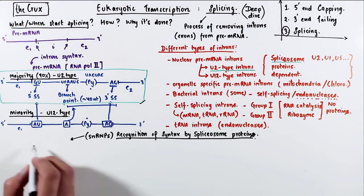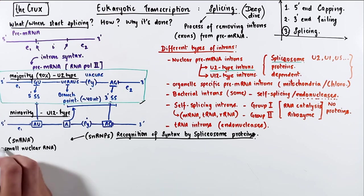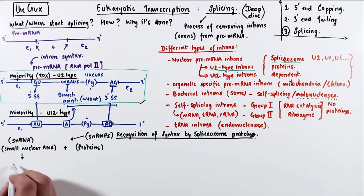Calling them simple proteins is technically not correct. In reality, they are small nuclear ribonuclear proteins, or snRNPs for short, which means that they are made up of small nuclear RNA, and they have some protein component.